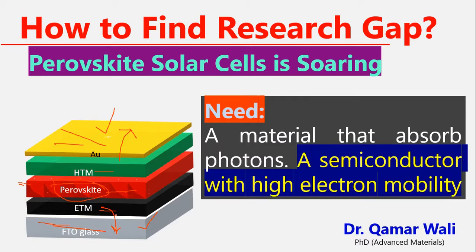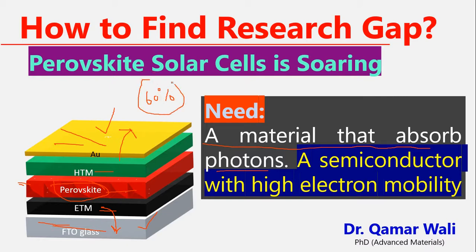What is the basic need here? We need a material that absorbs photons — very simple. For example, if the perovskite absorbs about 60% of solar light, we are losing 40%. So we need a material that can absorb 70% or more — this is a research gap.